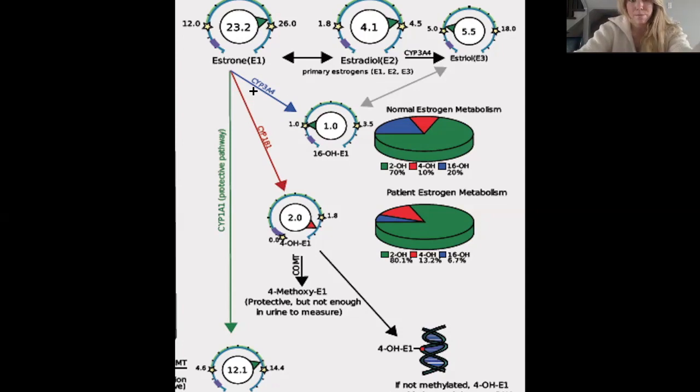And then when you use DIM is when you have elevated levels of E1 and you have elevated levels of 4-OH. You don't want to use DIM in someone who has low estrogen because it can lower it more. So DIM is really indicated in those with healthy estrogen levels or elevated estrogen levels. It helps to improve this ratio.